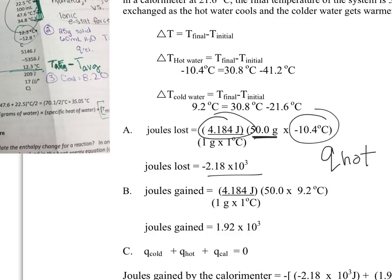Then you're going to do the same thing for the cold water. So this is Q cold. I'm using the same values, except now you're going to put in that change for the cold water.